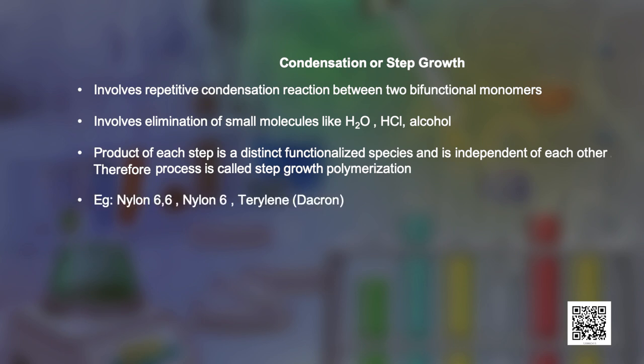As shown here, the reaction of ethylene glycol and terephthalic acid to form terylene is an example of this type of polymerization. But in order to understand the chemistry of various reactions, it is important to learn about their mechanisms.